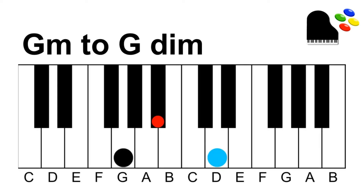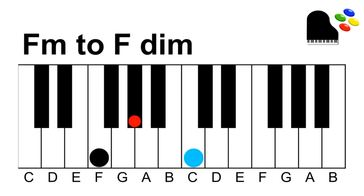Here we have G minor. We're going to create G diminished — take this top note and move it down a half step. We have G diminished. Here we have F minor, and this is the same situation as creating an augmented chord out of A major. We're going to take this top note and move it down, but the diminished fifth is not going to be on a black key — it's going to be on a white key, so it's just going to look a little different.